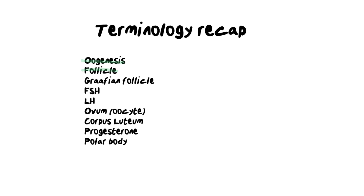These follicles grow really large inside the ovary and become something called the graafian follicle. All of this process of oogenesis happening inside the ovary is maintained and monitored by two main hormones: FSH — follicle stimulating hormone — which starts the process, and luteinizing hormone, LH, which is responsible for ovulation, essentially pushing the egg out of the ovary and into the fallopian tube.